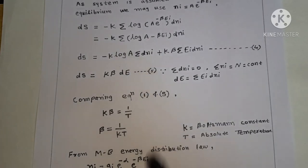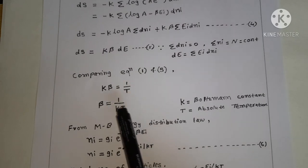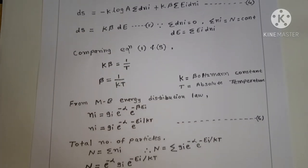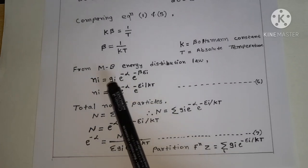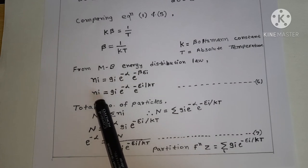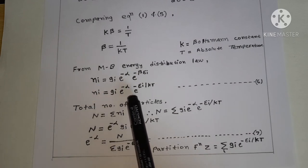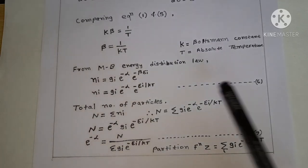Comparing Equation 1 and Equation 5, we can write k·beta equals 1/T. Therefore, beta equals 1/(kT), where k is Boltzmann's constant and T is the absolute temperature.